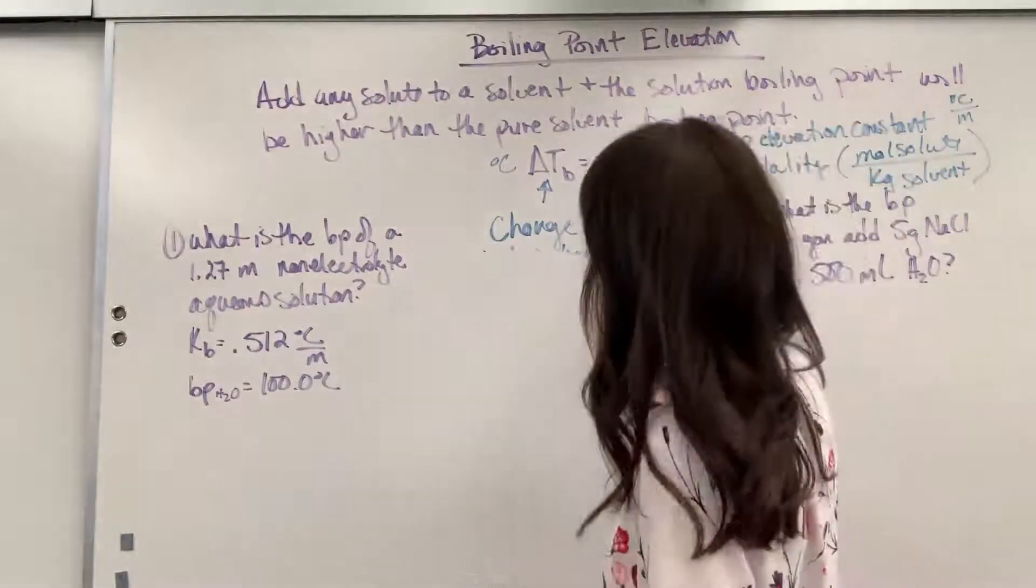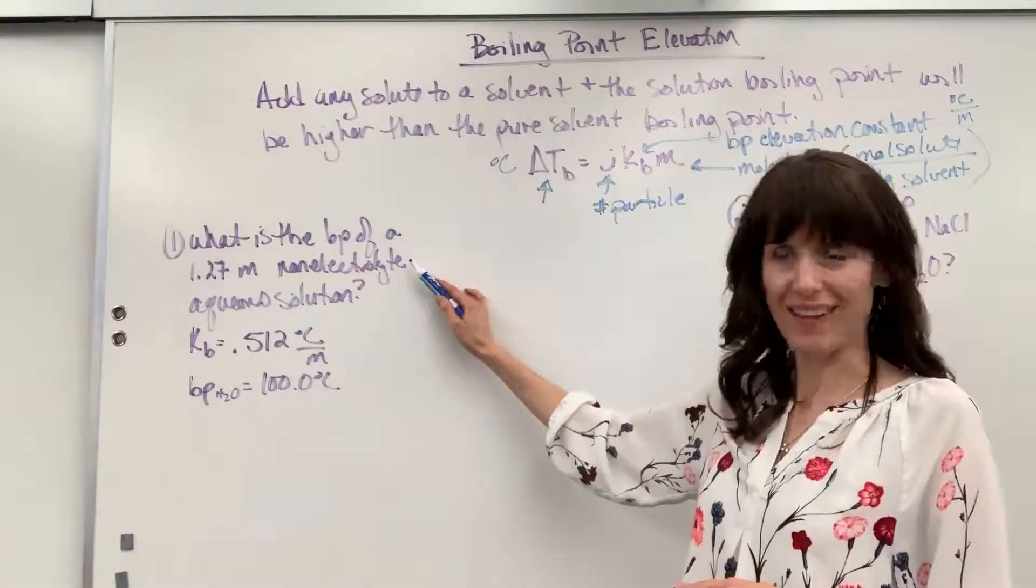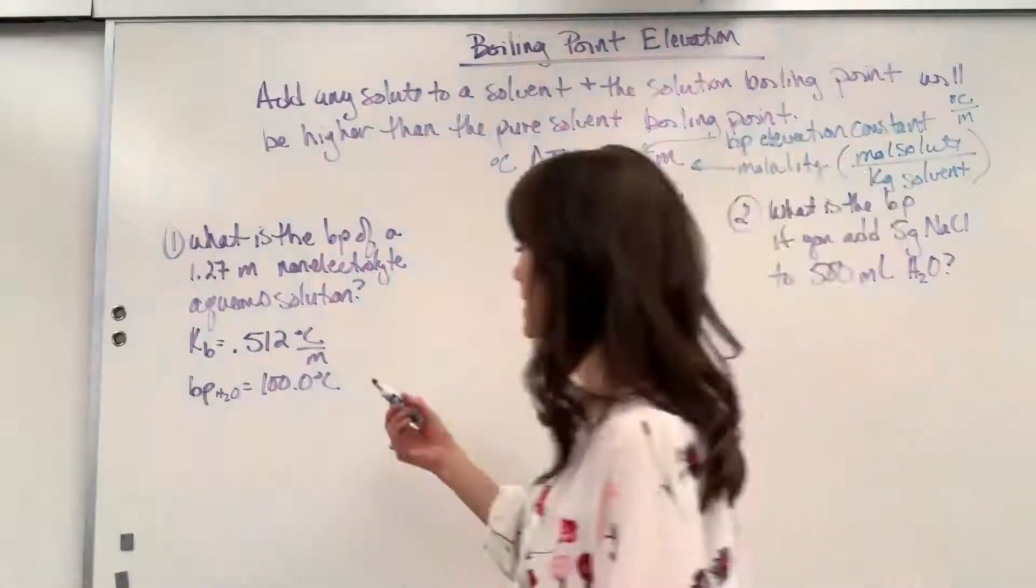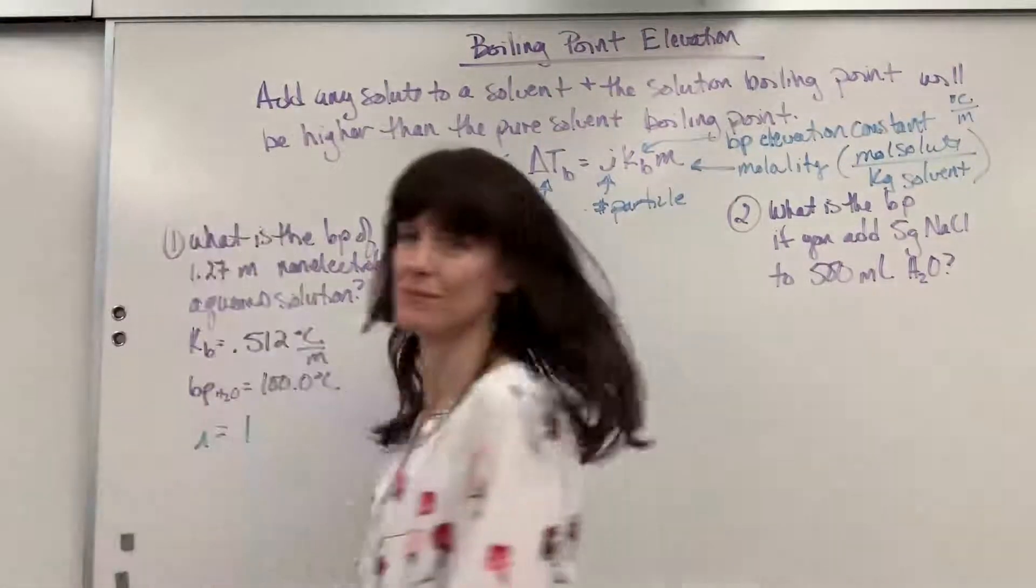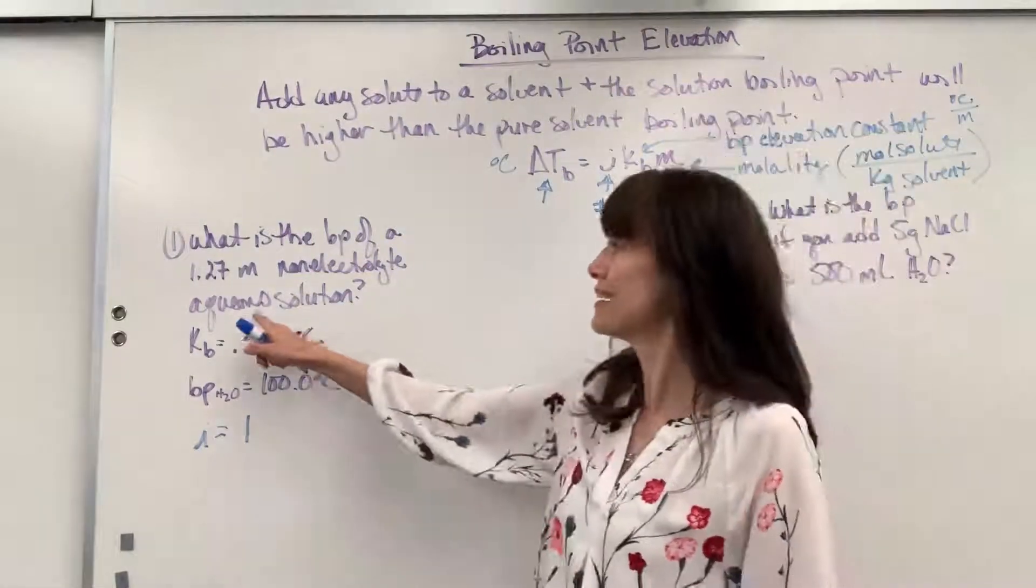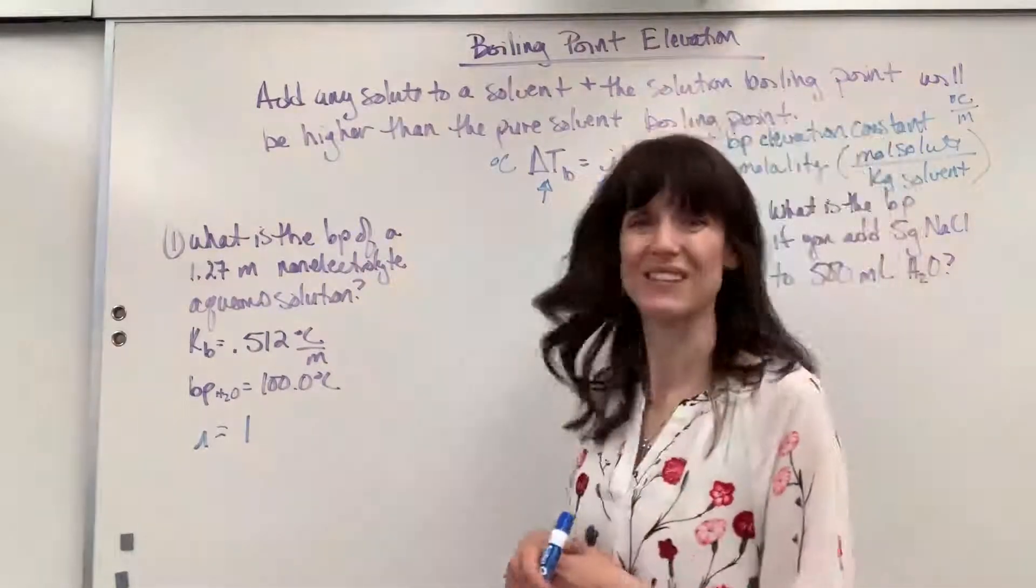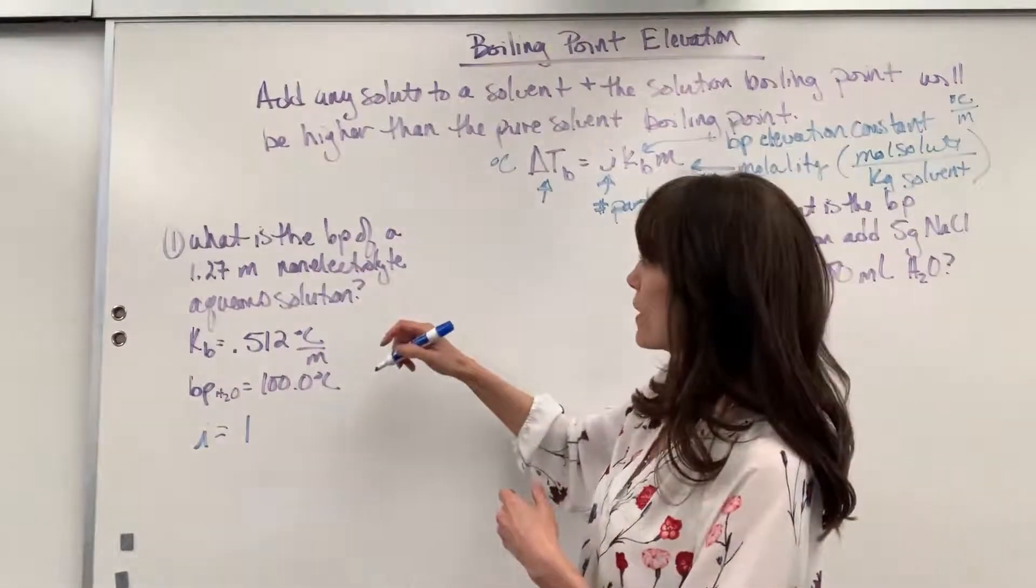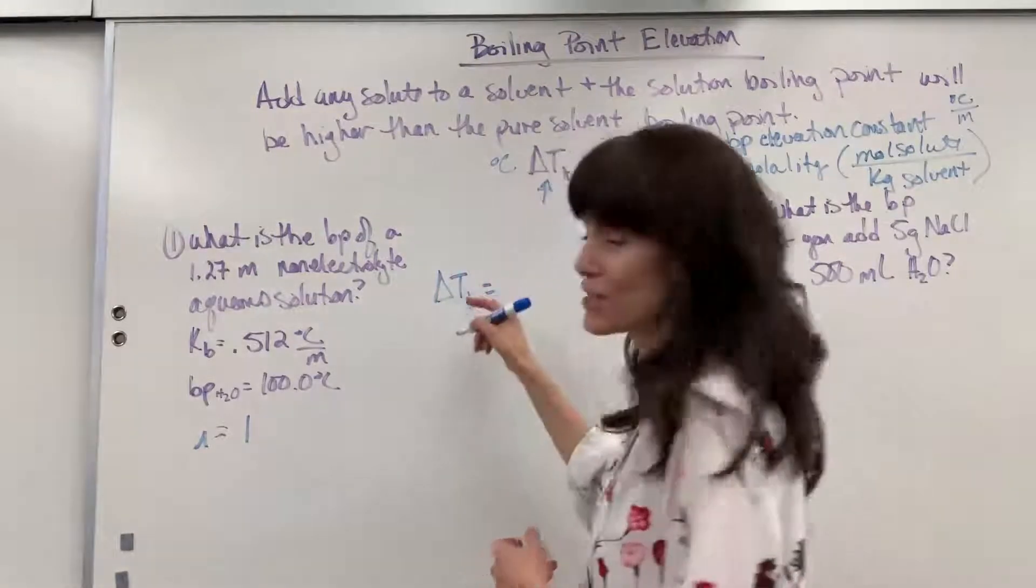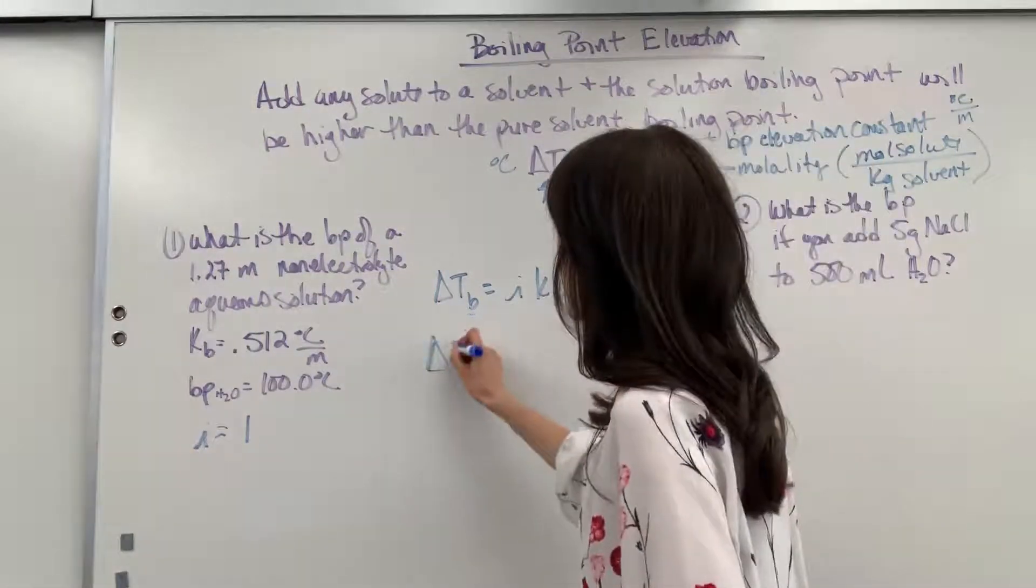Here is question number one. It says, what is the boiling point of a 1.27 molal non-electrolyte aqueous solution? Non-electrolyte tells me that I is going to be one. Aqueous tells me that our solvent is water. We want to know the boiling point, the new boiling point, so we've got to find the change. Delta T sub B, the change in the boiling point, is going to be I times KB times M. Let's go ahead and plug everything in.